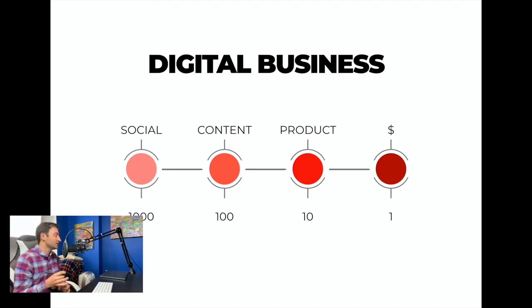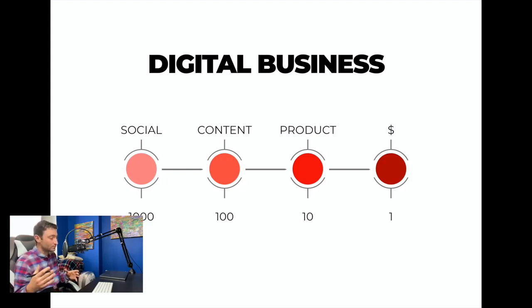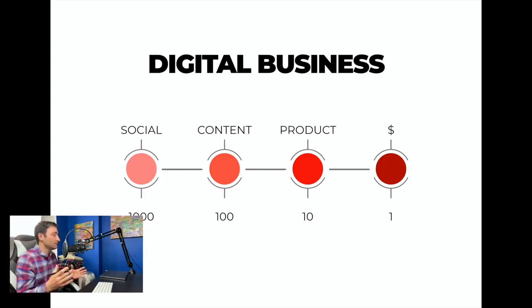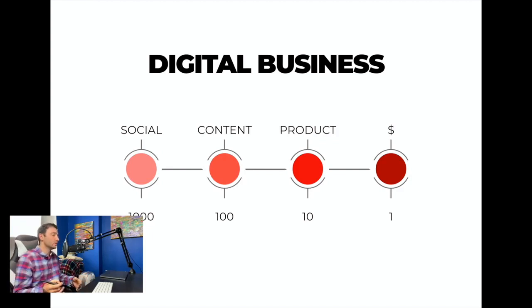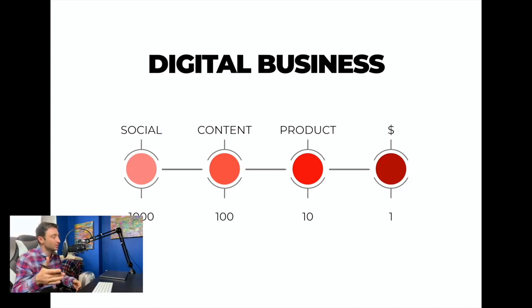It starts with a thousand people, then a hundred might be interested in the content, then ten might view the product, then one might purchase it. This is where content marketing and UX come in, because social media goes out to many people and you have to generate lots and lots of views to get that single sale at the end. That's why UX is so important — it comes in at every stage and helps the funnel.